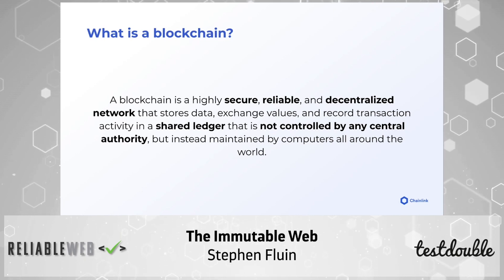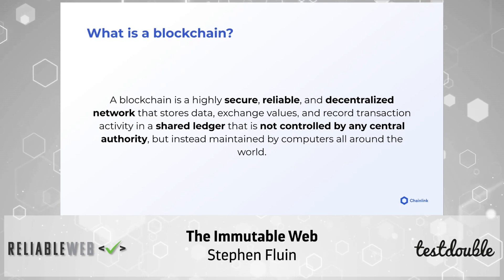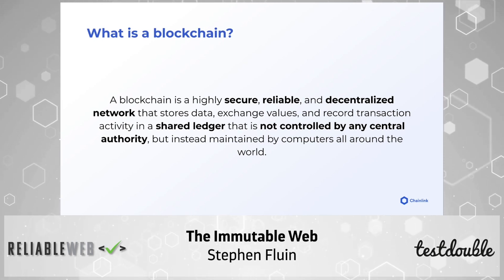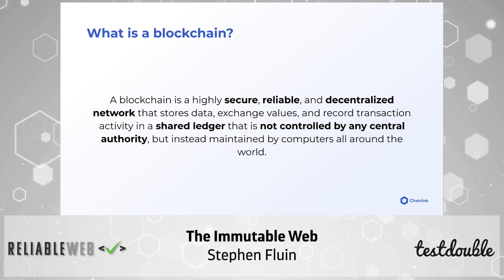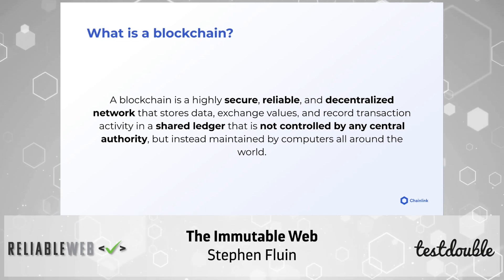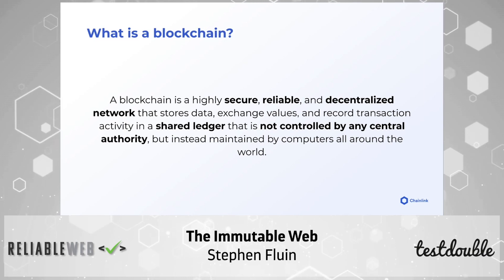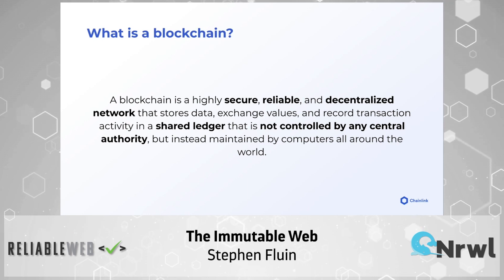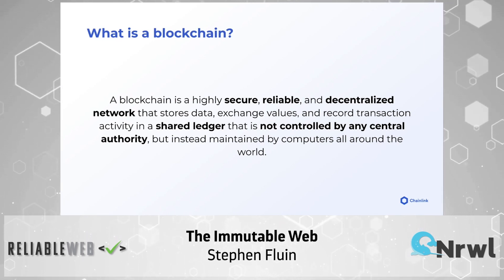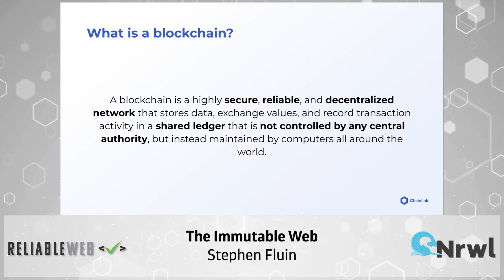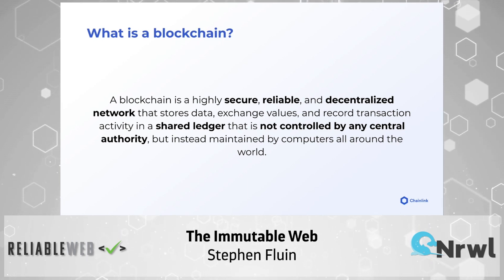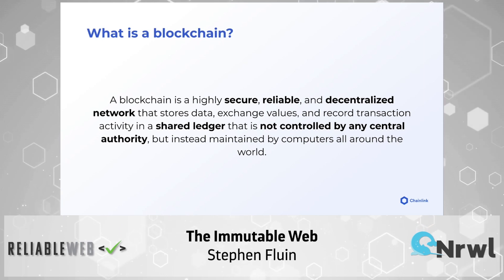A blockchain is a highly secure, reliable, and decentralized network. It stores data, exchanges value, records transaction activity in a shared ledger, is not controlled by a central authority, but instead maintained by computers all around the world. This shared ledger — generated by computers across the globe — makes it hack-resistant, very expensive to manipulate, very public and very transparent. Everyone participating in the network can see what's going on. Contrast that with a Google Compute Engine server, where you can't really trust anything happening there — data could be manipulated or intercepted with no visibility.